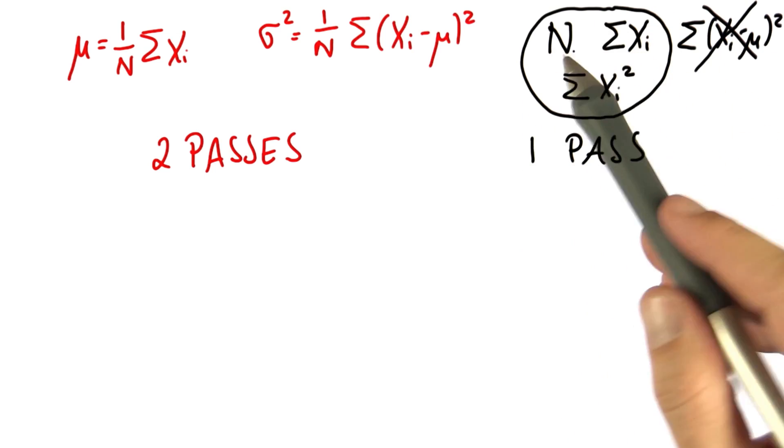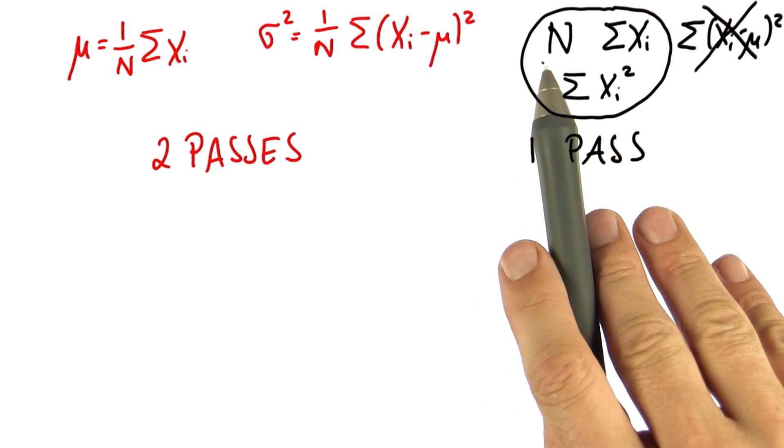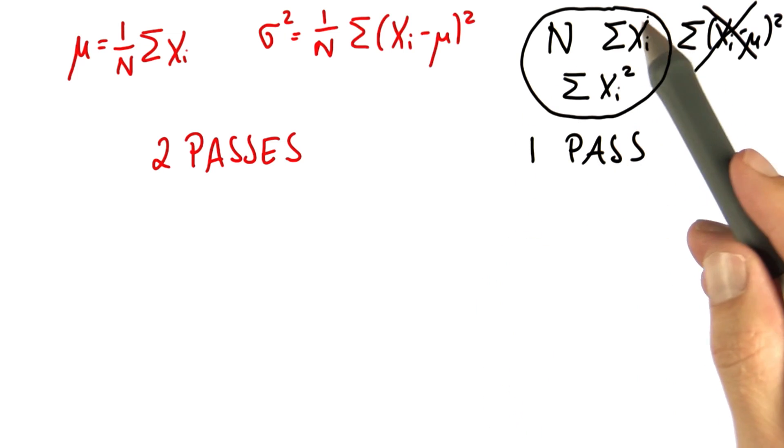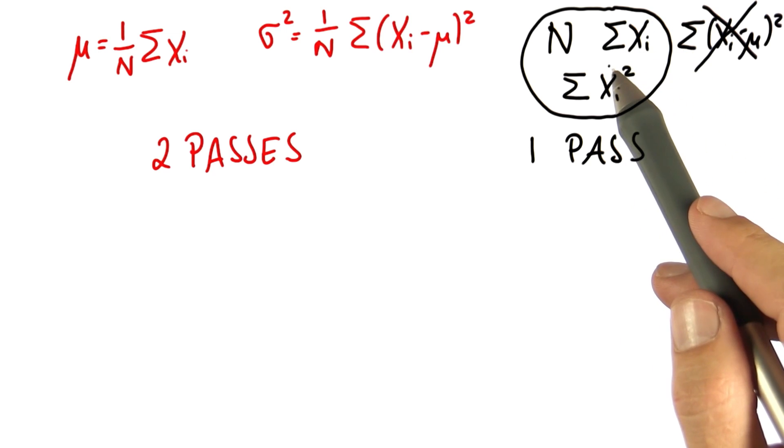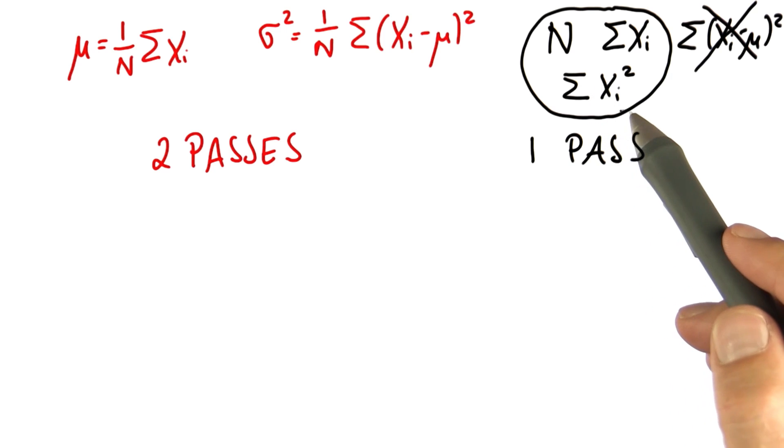To see, as we go through the data, we can maintain the number of data items that we have, we can maintain the sum over here, we can maintain the sum of the data themselves, and we can maintain simultaneously the sum of the square of the data items.